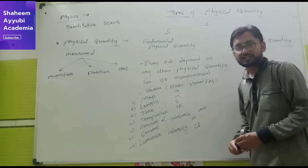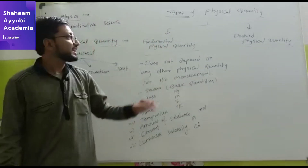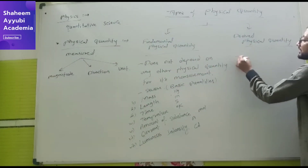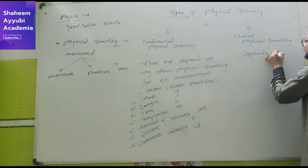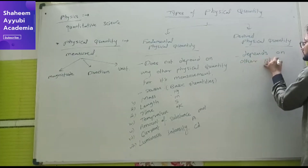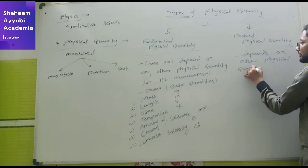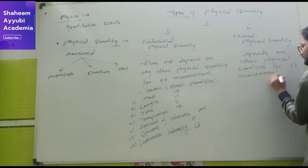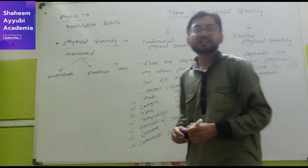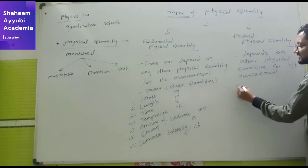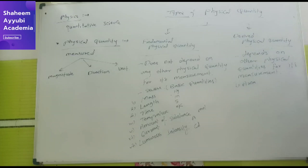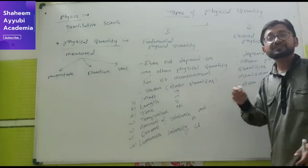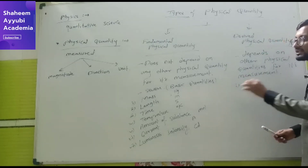Now what is a derived physical quantity? A physical quantity which depends on other physical quantities for its measurement. For example, area — area is length into length, that is length squared. So basically area is defined using length two times.